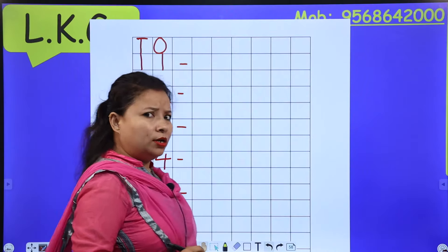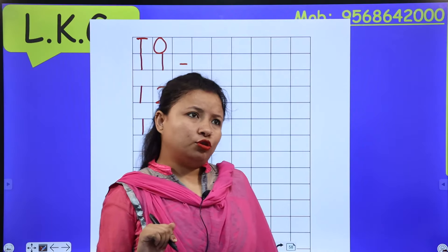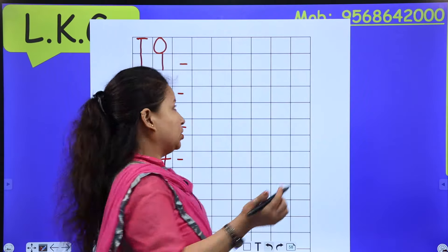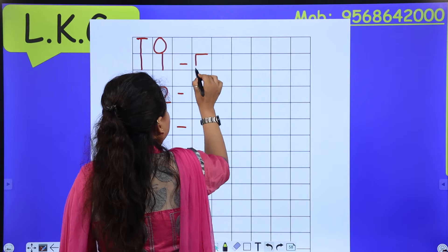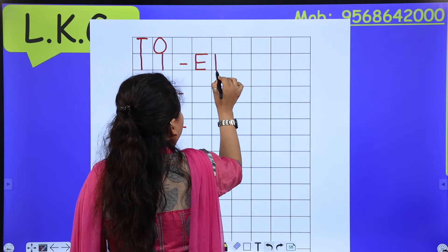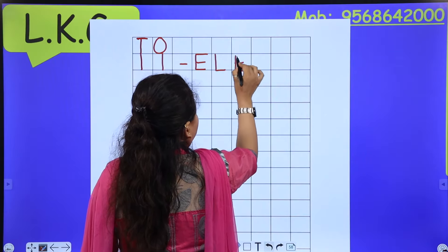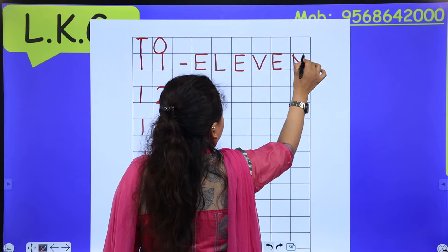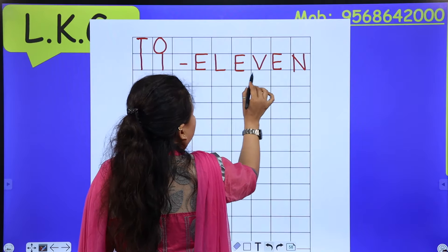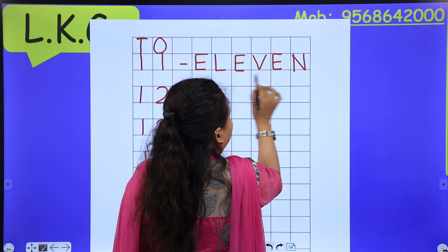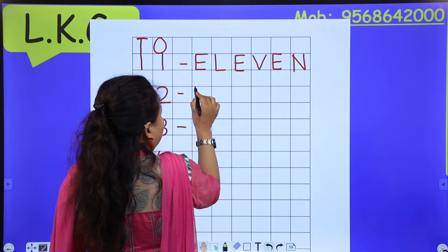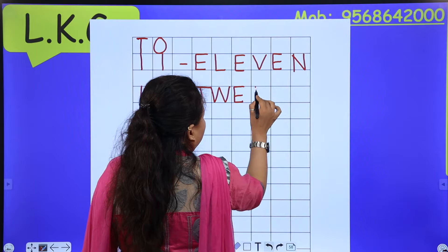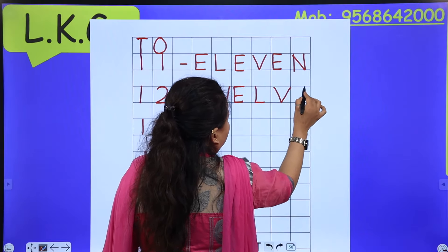How to spell 11? First, think about how to spell 10: T-E-N. So how do we spell 11? The spelling is E-L-E-V-E-N — eleven. And 12 is spelled T-W-E-L-V-E — twelve.